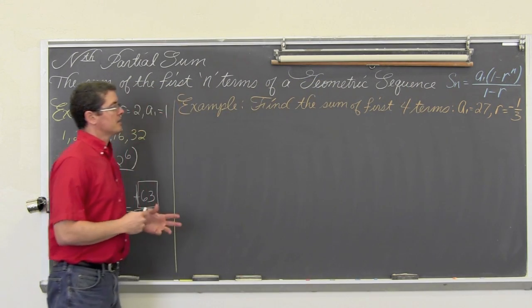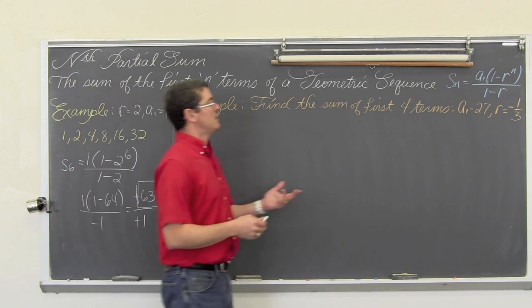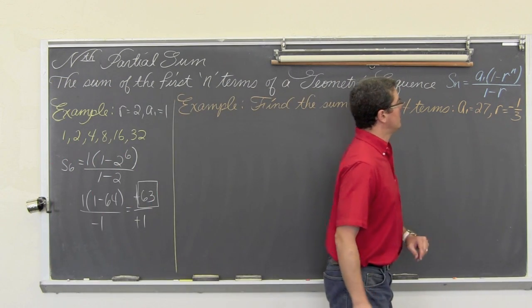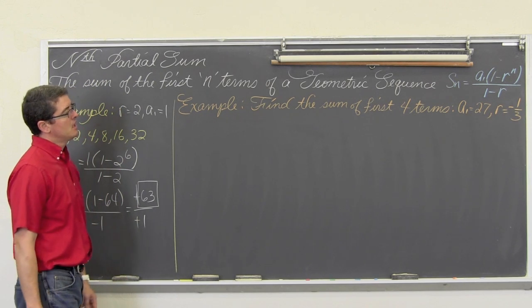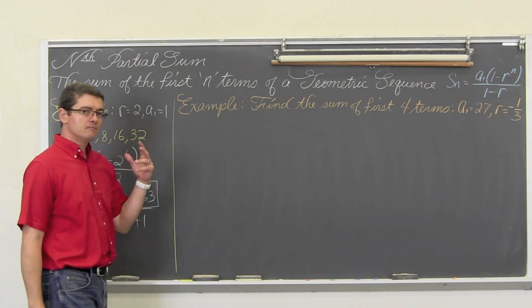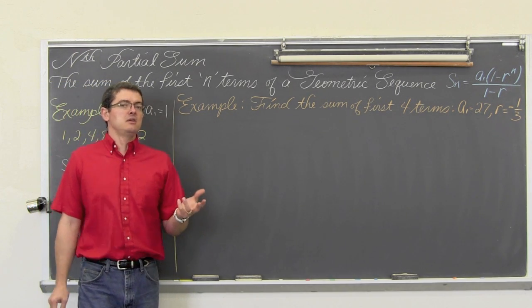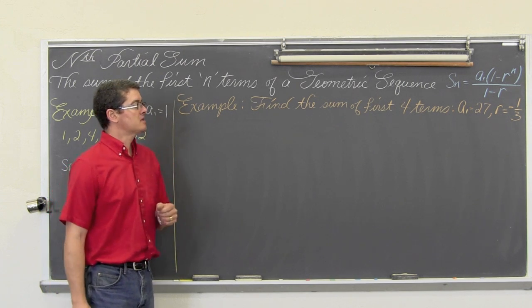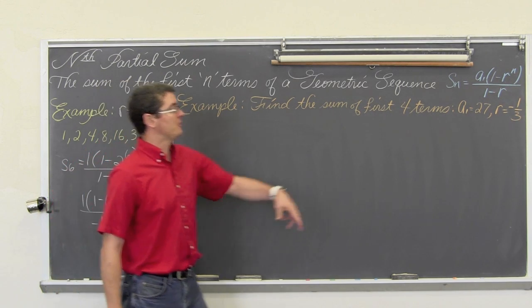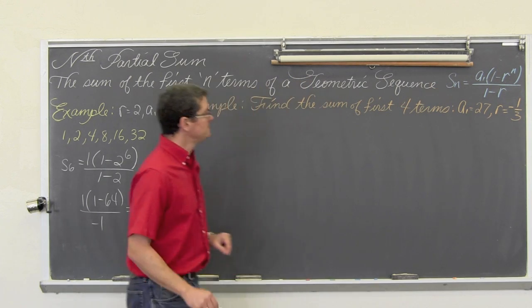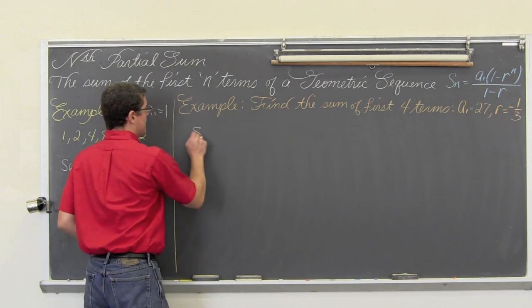We have another example here. It is a little bit more complicated because of the r value being a fraction, but we are only going to find the sum of the first four terms. You might still want to do this mentally in your head, but when we start adding up a lot more than just a few terms, you definitely want to apply this shortcut formula.